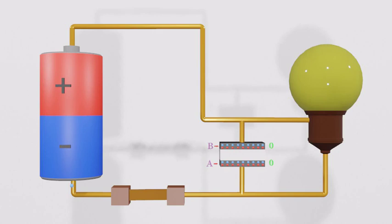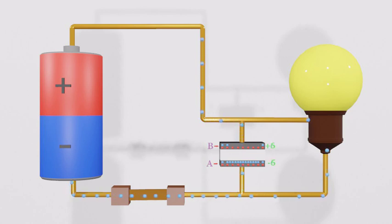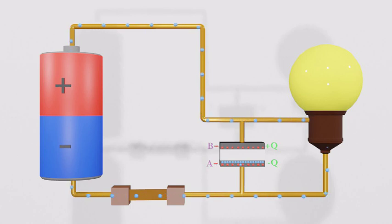Let's review: when the switch is closed, electrons start to flow from the battery and the capacitor stores electrons — the capacitor is charging. When the potential difference of the capacitor and the battery are equal, no more electrons go into the capacitor — the capacitor is fully charged.